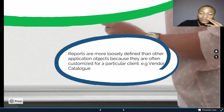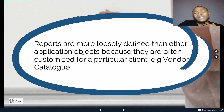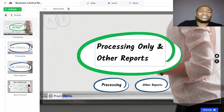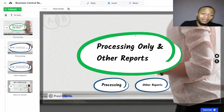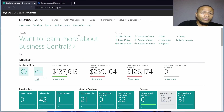Other reports are more loosely defined than other application objects because they are often customized for a particular client — for example, a vendor catalog. You can customize the report not necessarily to fit a particular setup; you can have your own report in whatever way you want. This is what we'll explore in this series.